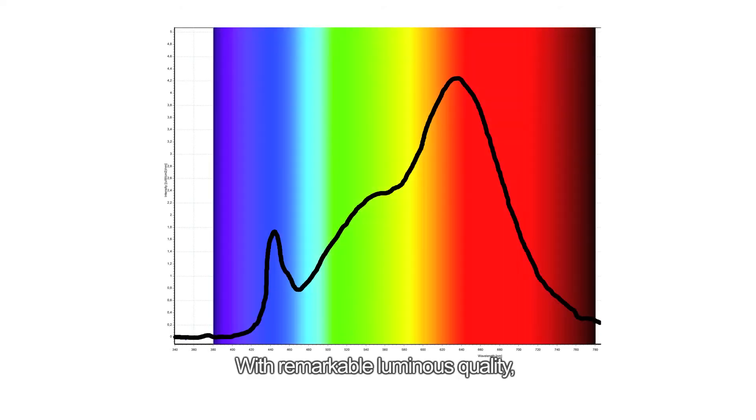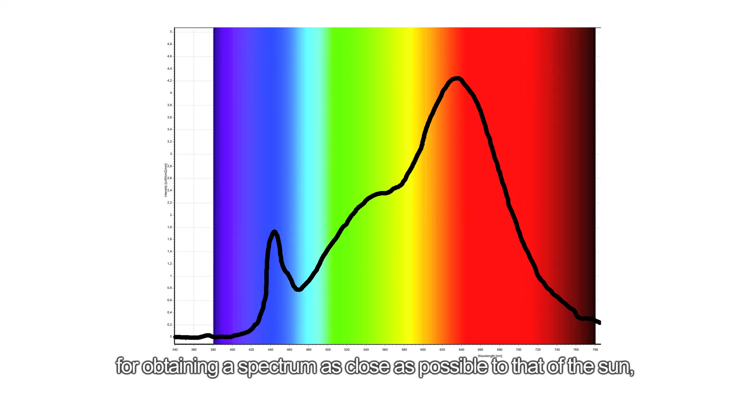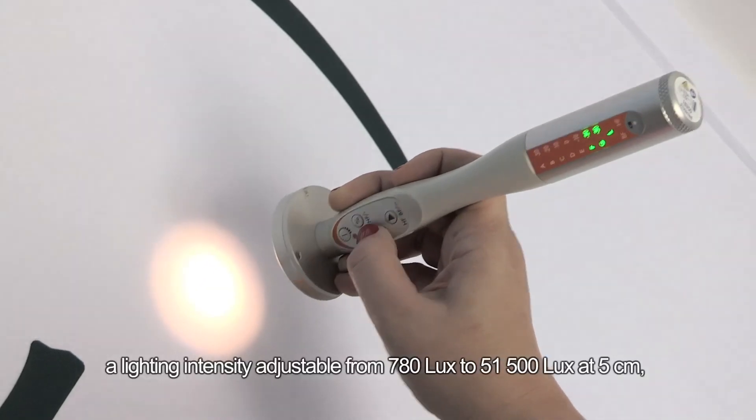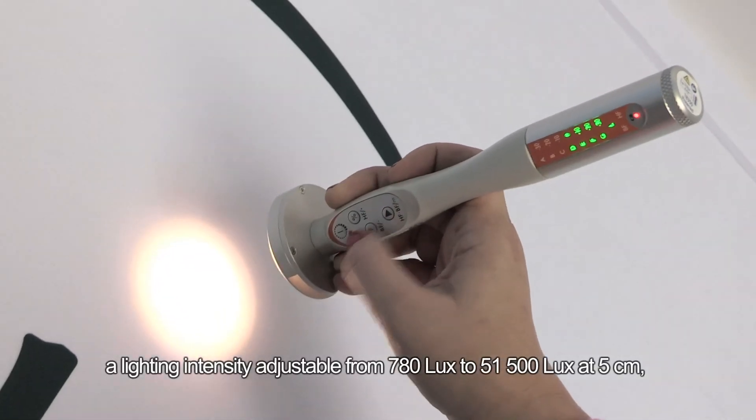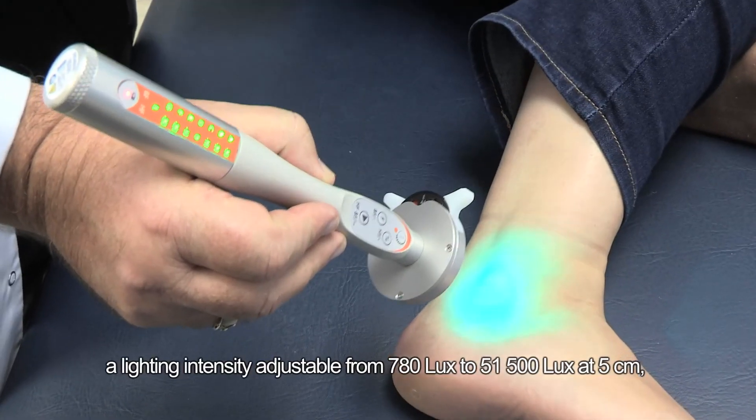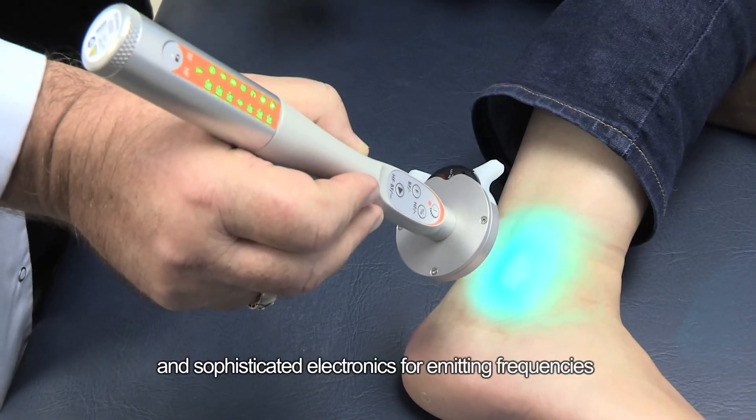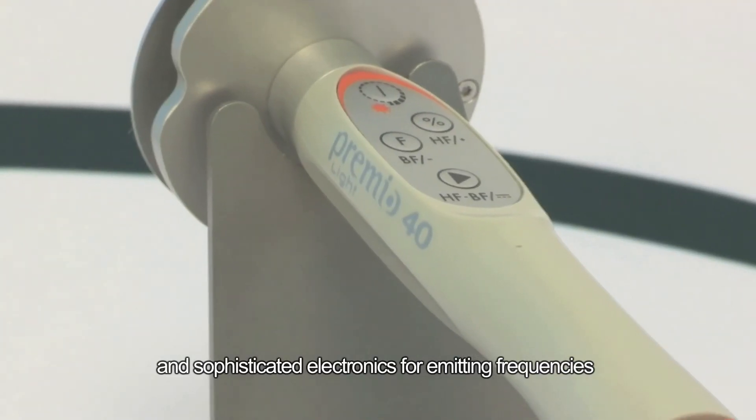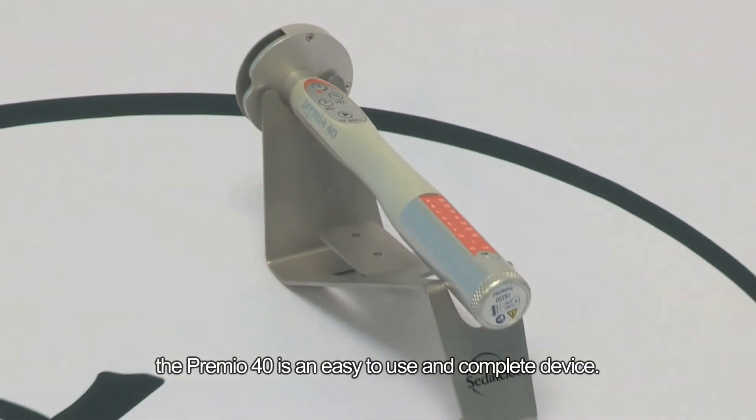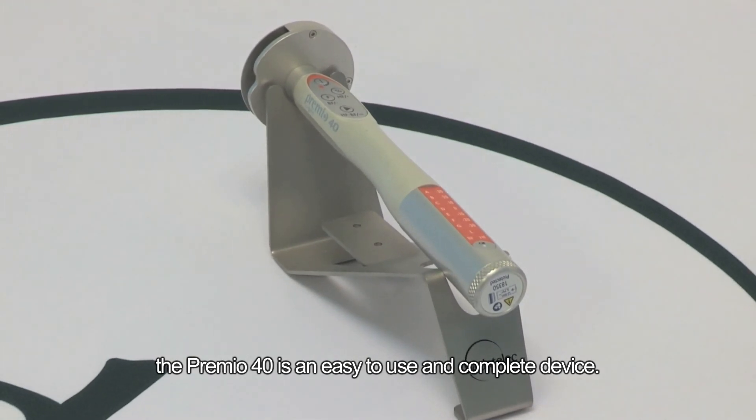With a remarkable luminous quality, thanks to the latest generation high CRI diode for obtaining a spectrum as close as possible to that of the sun, a lighting intensity adjustable from 780 lux to 51,500 lux at 5 centimeters, and sophisticated electronics for emitting frequencies with a high precision of 0.01%, the Premio 40 is an easy to use and complete device.